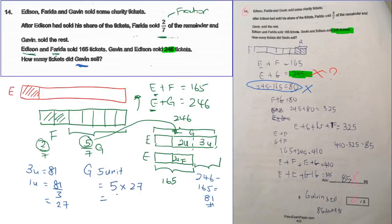So five units — one unit is 27, so five units equals 135. That's the answer. Okay, that's all for this question.